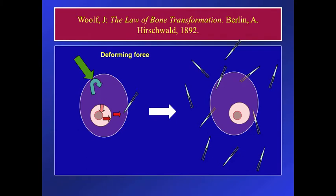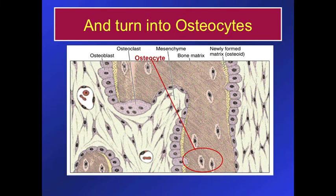That could be a cell that's elongated, pressed, twisted, compressed — you name it. This is the cell's reaction. As it secretes bone, it makes its way into the bone, basically by surrounding itself with its own secretions.